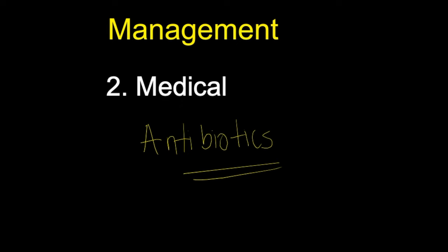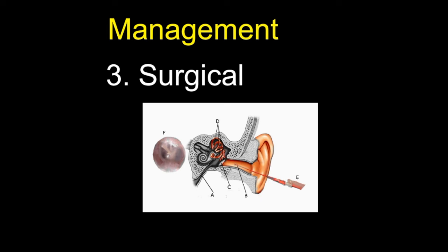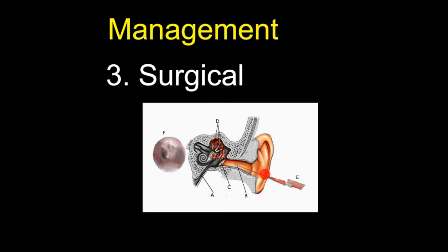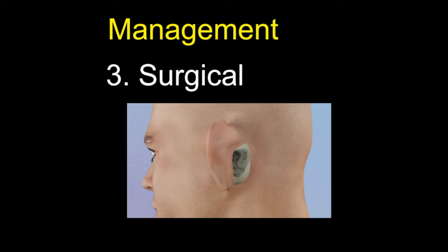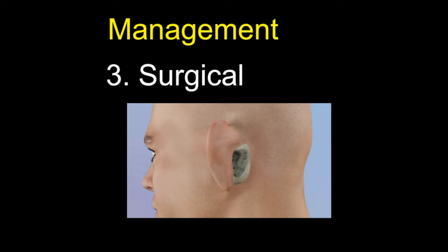For surgical management, one option is tympanocentesis — removal of fluid behind the eardrum using a special needle with a tube to collect a fluid sample, followed by culture and sensitivity testing. Another option is inserting a T-tube: a small incision is made in the tympanic membrane and a plastic tube is inserted to allow pus to drain. In severe cases, an ENT surgeon may perform a cortical mastoidectomy to remove cells in the hollow air-filled spaces in the skull behind the ear. Follow-up includes outpatient wound review one to two weeks post-surgery and pure tone audiometry to check for persistent conductive hearing loss.